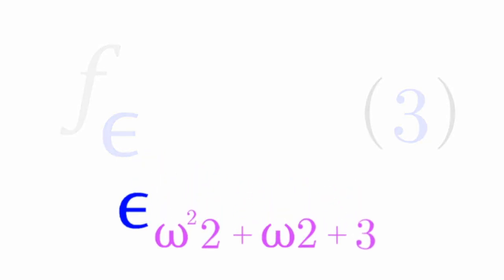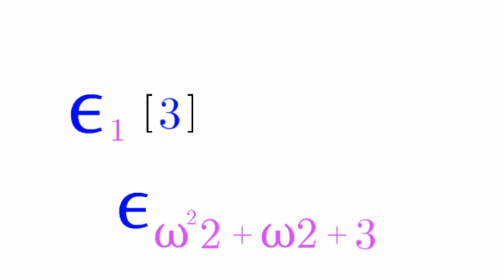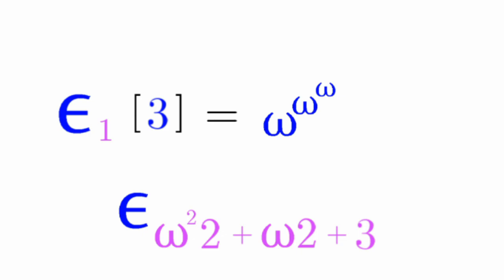So how do we break this down? Remember how epsilon_1(3) was broken down — you turn it into omega to the omega to the omega to the epsilon_0, plus 1, of 3.